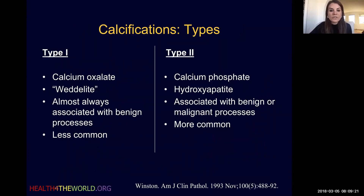There are two different types of calcifications in the breast. Type 1 are calcium oxalate, which are almost always associated with benign processes in the breast, and these are the less common type. Type 2, the more common type we see in the breast, are calcium phosphate or hydroxyapatite, and these are associated with either benign or malignant processes. The problem is on mammography we cannot differentiate between the two.